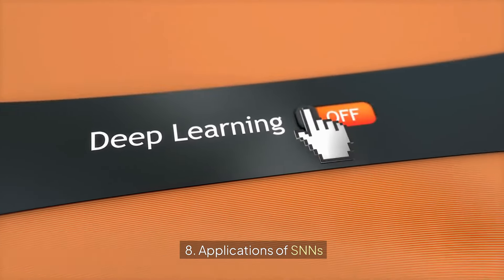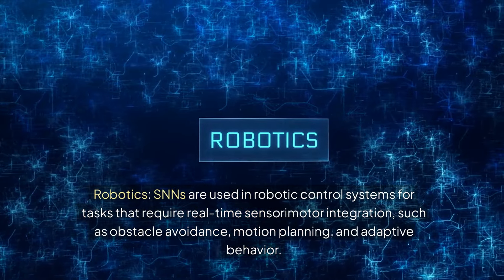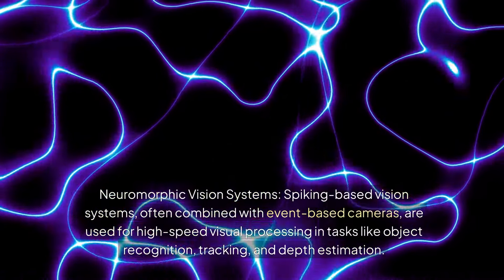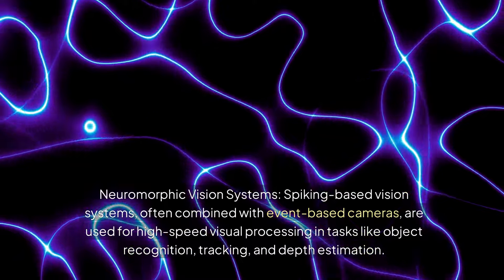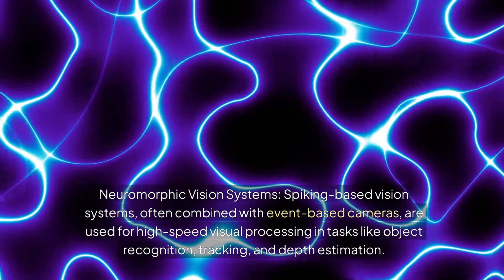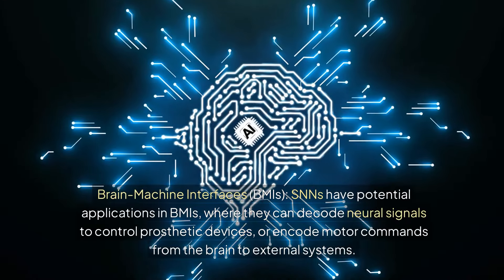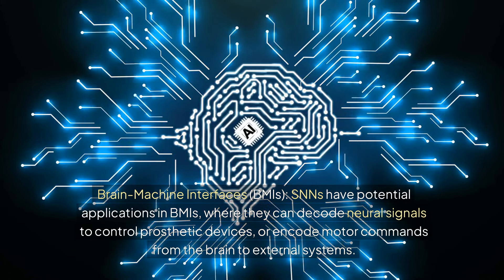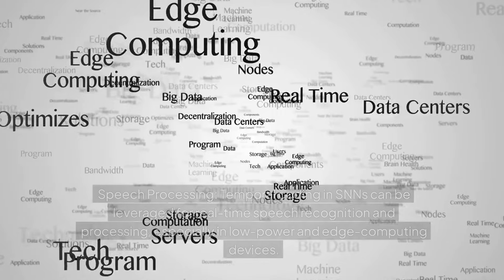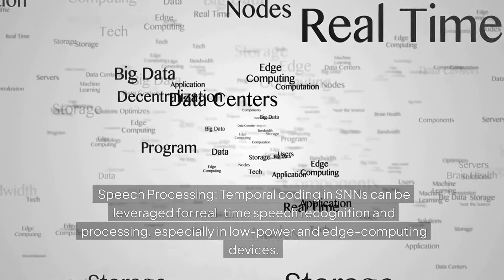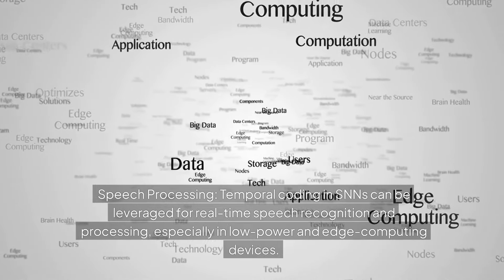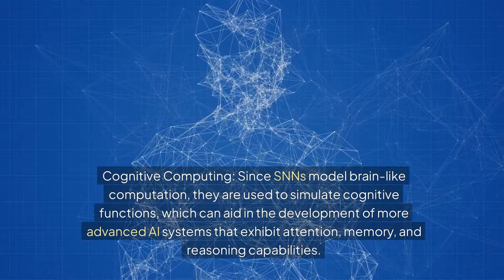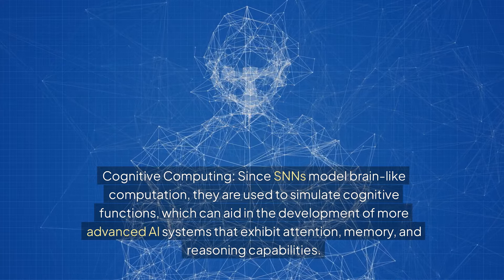8. Applications of SNNs: Robotics — SNNs are used in robotic control systems for tasks that require real-time sensorimotor integration, such as obstacle avoidance, motion planning, and adaptive behavior. Neuromorphic vision systems — spiking-based vision systems, often combined with event-based cameras, are used for high-speed visual processing in tasks like object recognition, tracking, and depth estimation. Brain-machine interfaces, BMIs — SNNs have potential applications in BMIs where they can decode neural signals to control prosthetic devices or encode motor commands from the brain to external systems. Speech processing — temporal coding in SNNs can be leveraged for real-time speech recognition and processing, especially in low-power and edge computing devices. Cognitive computing — since SNNs model brain-like computation, they are used to simulate cognitive functions, aiding in the development of more advanced AI systems that exhibit attention, memory, and reasoning capabilities.